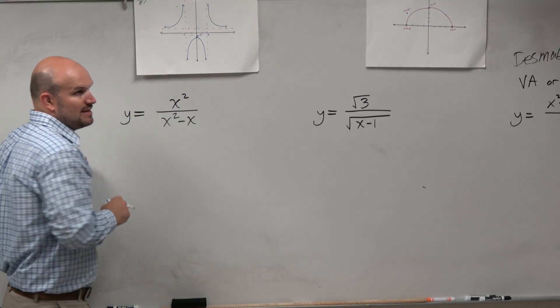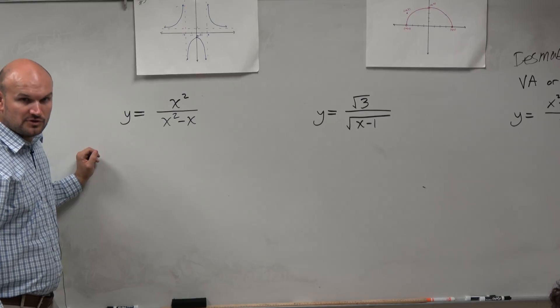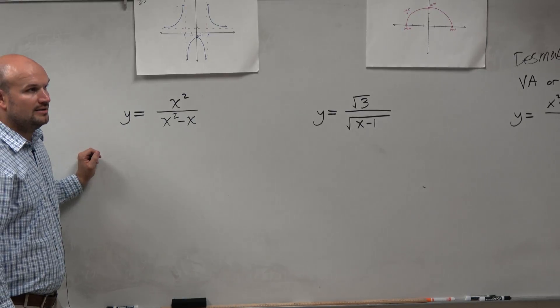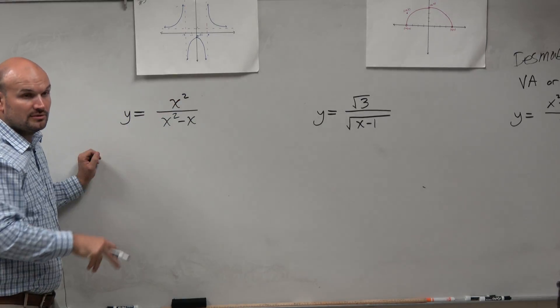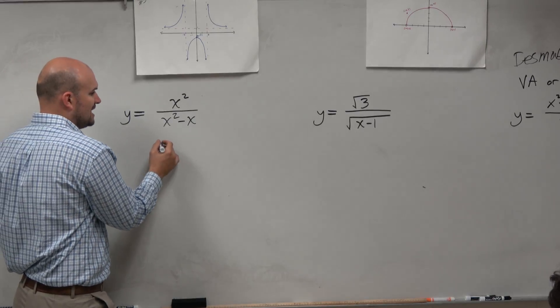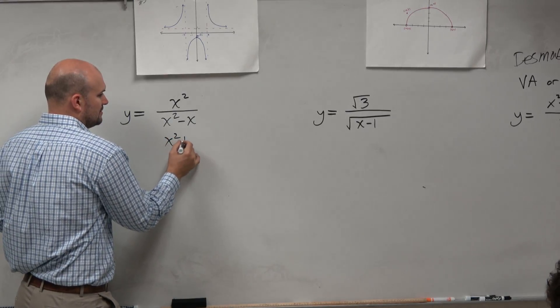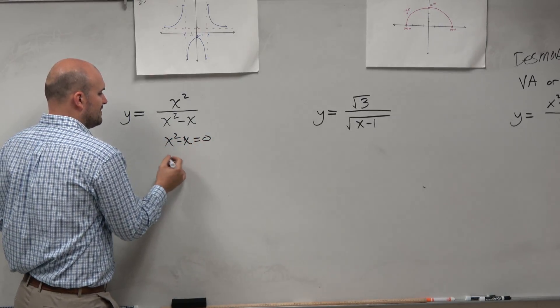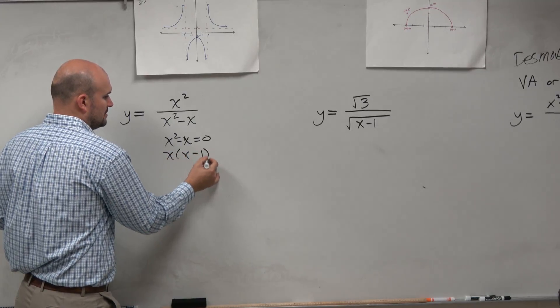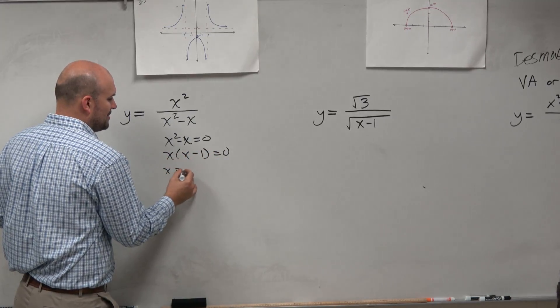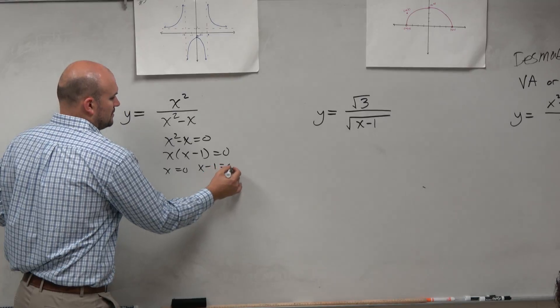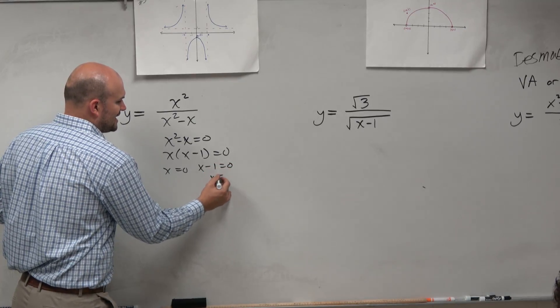So the only thing we need to worry about here is what are the numbers that make our denominator equal to 0? Those are not in our domain, right? So we set it equal to 0 and we solve. So this is kind of like the problem I actually already did. Factor out an x, apply the 0 product property.